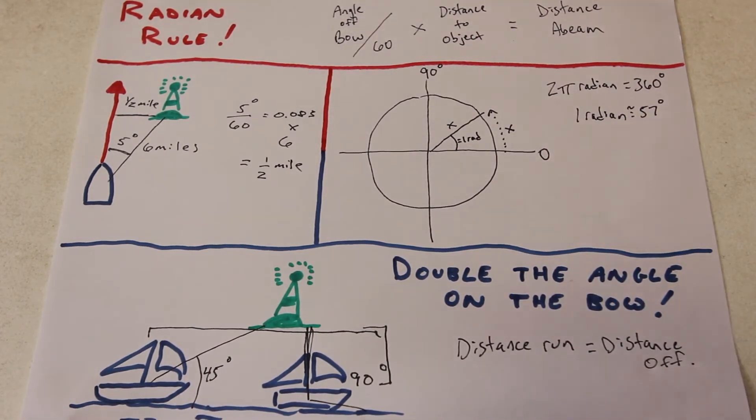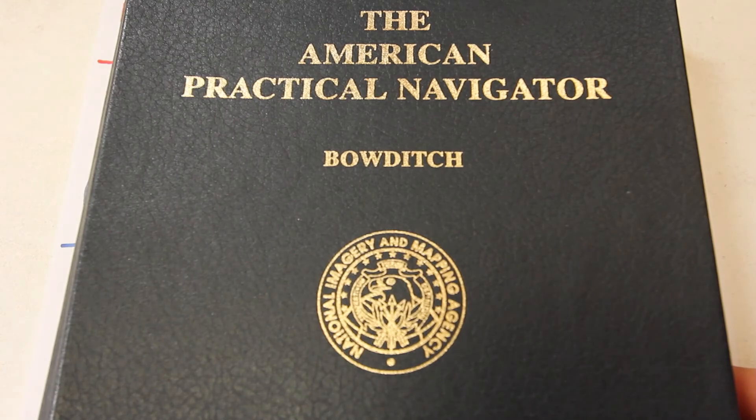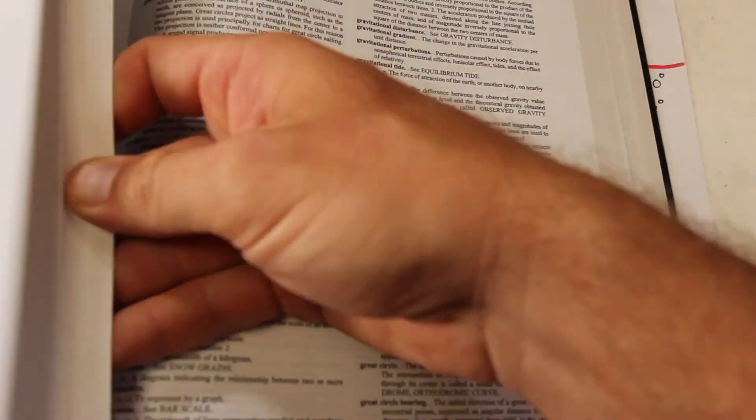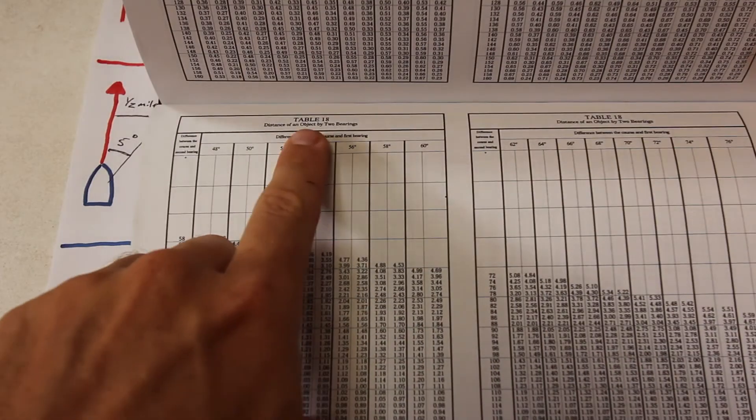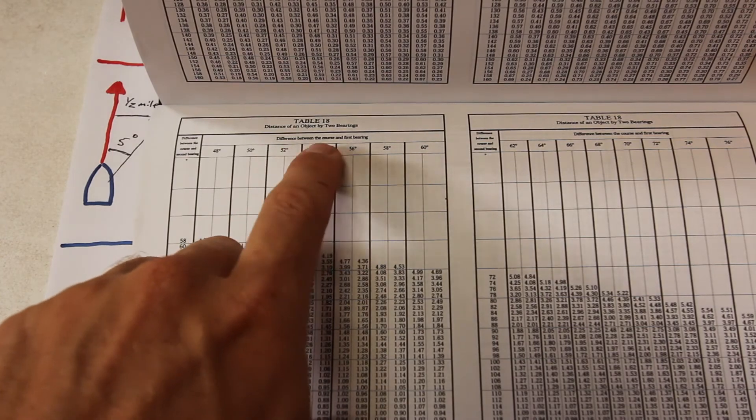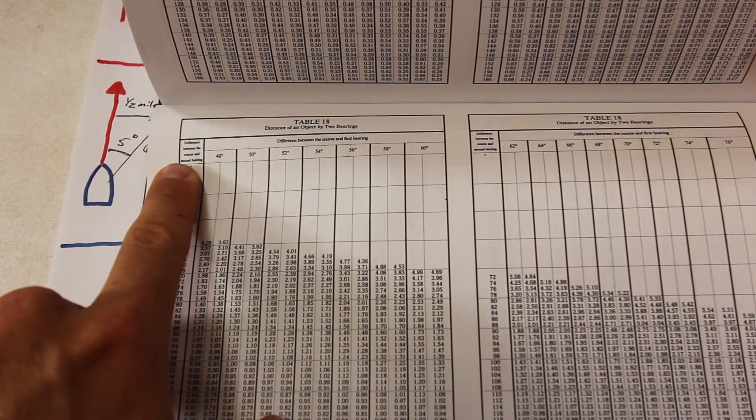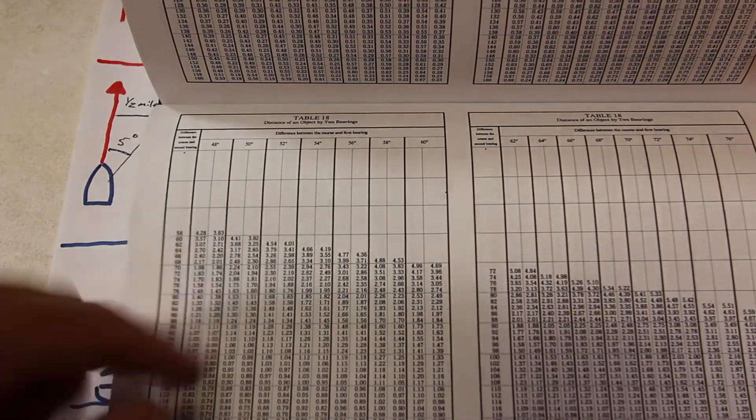There are a few more unique cases, but in general, Table 18 in Bowditch will help you solve any kind of distance off or distance run problem, and the table is pretty straightforward. But you need to be sure to read the instructions at the front of the table section.